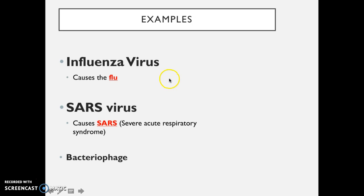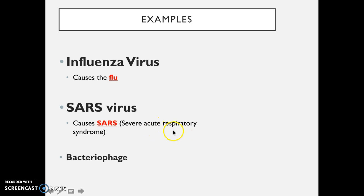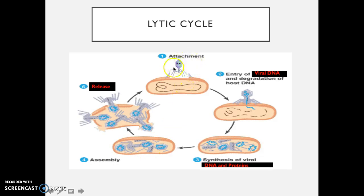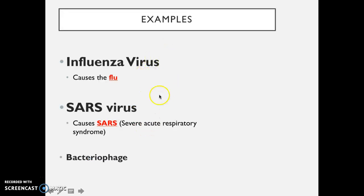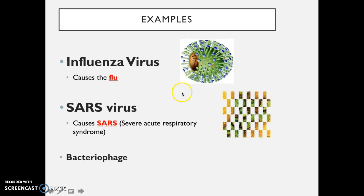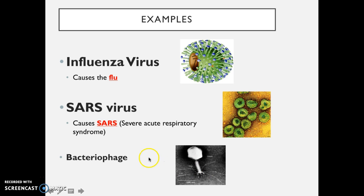Some viruses that follow the lytic cycle include the influenza virus. It's that time of the season where a lot of people are getting the flu — it's very, very quick, and you'll have symptoms very quickly. The SARS virus causes SARS, which is severe acute respiratory syndrome — a syndrome that damages your respiratory system and lungs. Another example is bacteriophages, which are those little viruses you can see in the image. These are examples of lytic viruses.